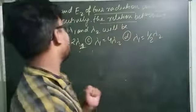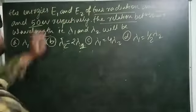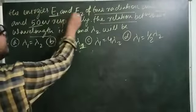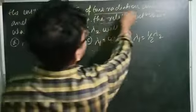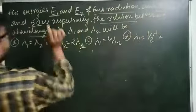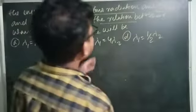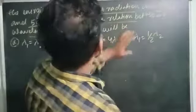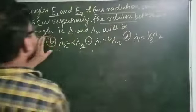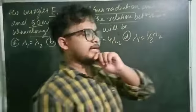Welcome to the channel again. The energies E1 and E2 of two radiations are 25 and 50 electron volt respectively. The relation between their wavelength lambda 1 and lambda 2 will be?